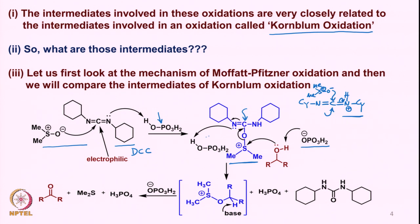In both cases, the protons are essentially lost. So you have the dihydrogen phosphate anion that picks up the hydrogen, and the negative charge of the oxygen from the alcohol reacts with the sulfur, and then this bond breaks. The phosphoric acid is regenerated by the abstraction of this proton, the nucleophilicity of the alcohol increases, and that leads to this particular intermediate.